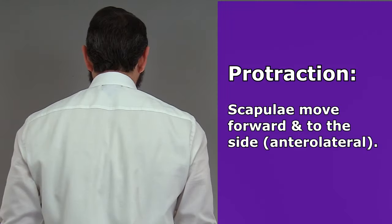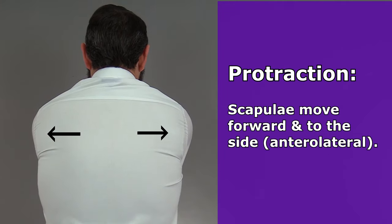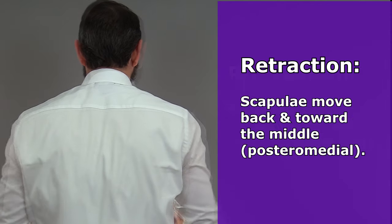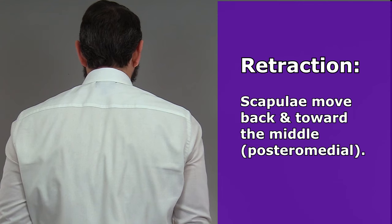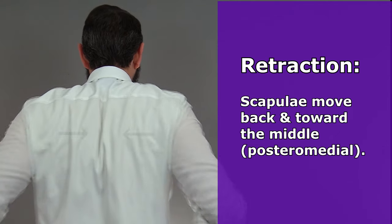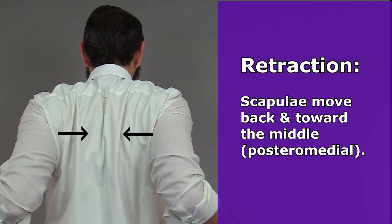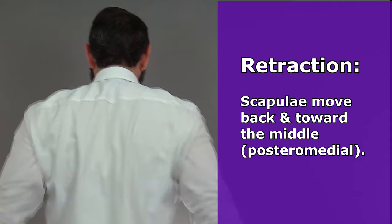Protraction moves the scapula forward or anteriorly and toward the side of the body or laterally, in an anterolateral direction. Retraction is the opposite movement — it causes the shoulder blades to move back or posteriorly and more toward the body's midline or medially, in a movement known as a posteromedial movement.